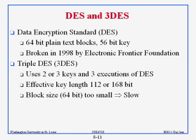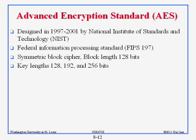A 56-bit key is not strong enough, so DES is no longer used. Instead we use Triple DES (3DES), which runs DES three times - so instead of 16 rounds, we do 48 rounds. You can use two or three different keys: with two keys you get 2 × 56 = 112 bits, or with three keys you get 3 × 56 = 168 bits. The 64-bit block size is also considered too small, making both DES and 3DES somewhat dated.